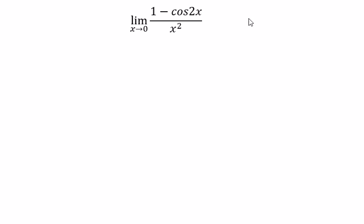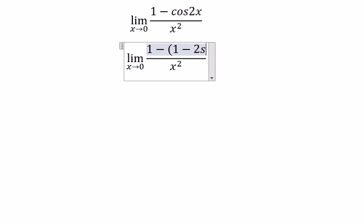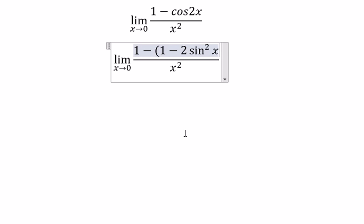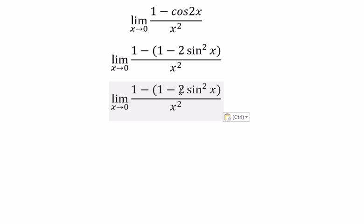For cosine 2x, we can use 1 minus 2 sine squared x. So 1 minus 1 gives us...